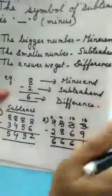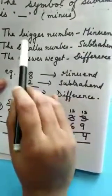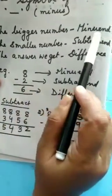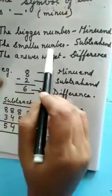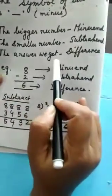And the bigger number, which means when we subtract, the bigger number is called minuend and the smaller number is called subtrahend. And the answer we get is difference.